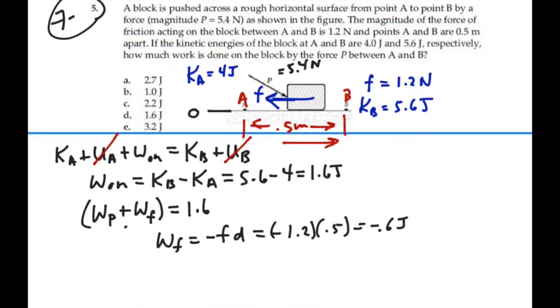Now, if we take this equation here, and we solve for the work done by P, that's going to equal 1.6 minus the work done by friction. So, that would be 1.6 minus a negative 0.6, which would be 1.6 plus 0.6, or 2.2 joules.